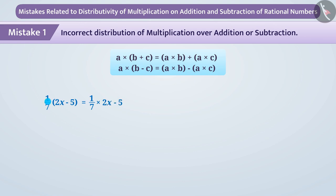They do not multiply the number outside the bracket with both the numbers written inside. They only multiply it with the first number.